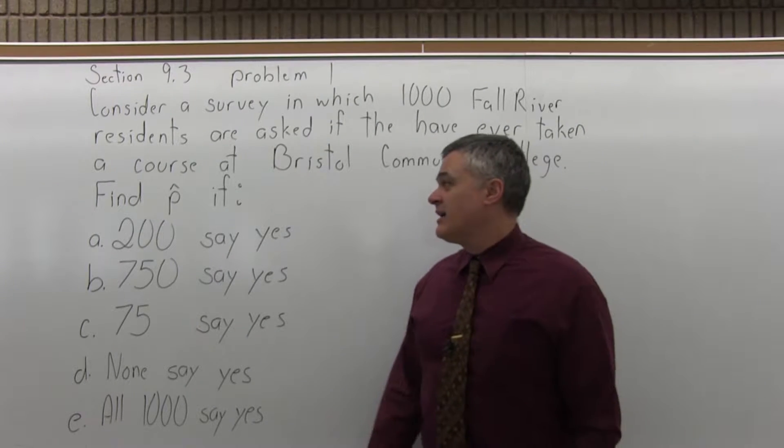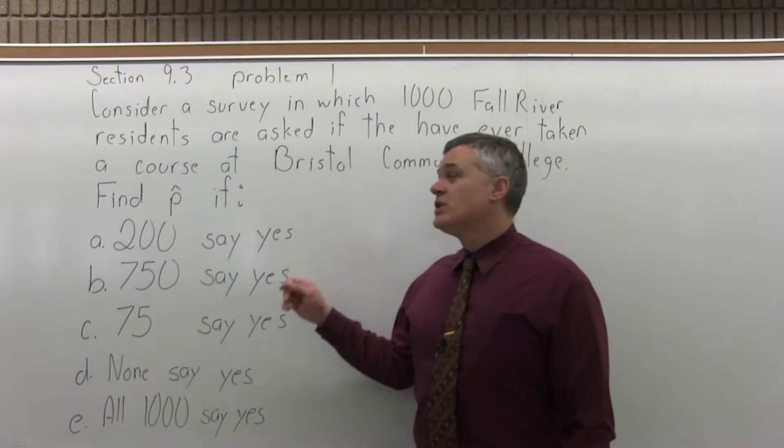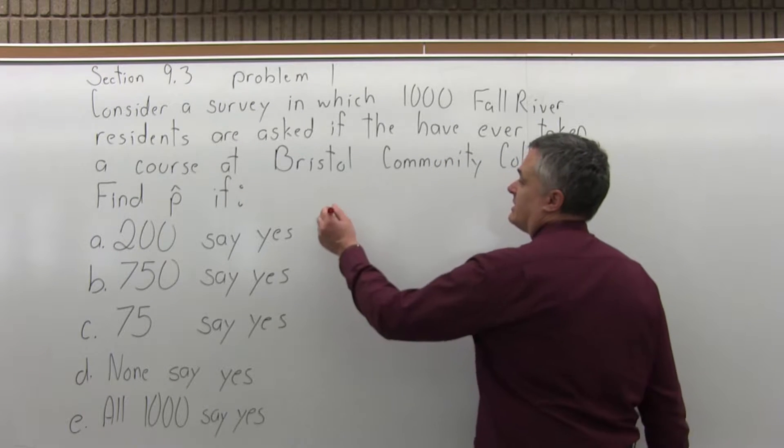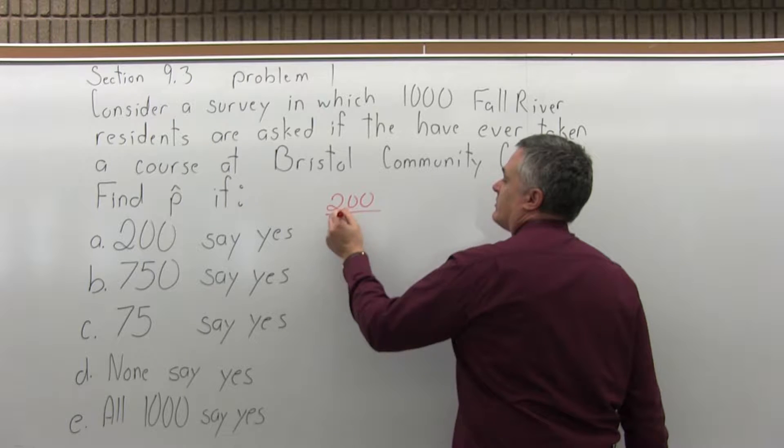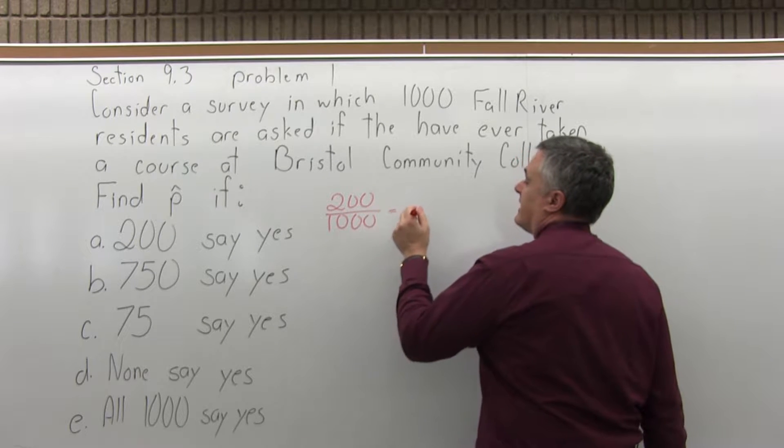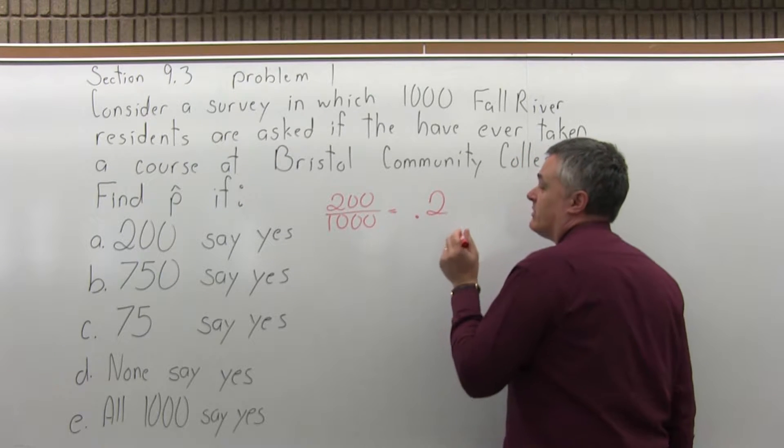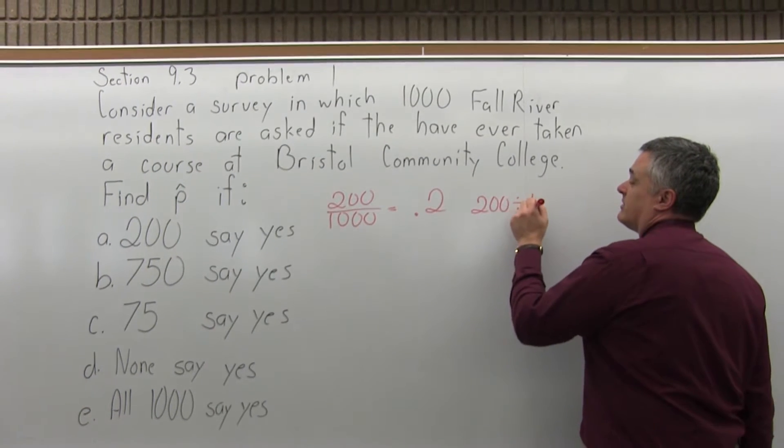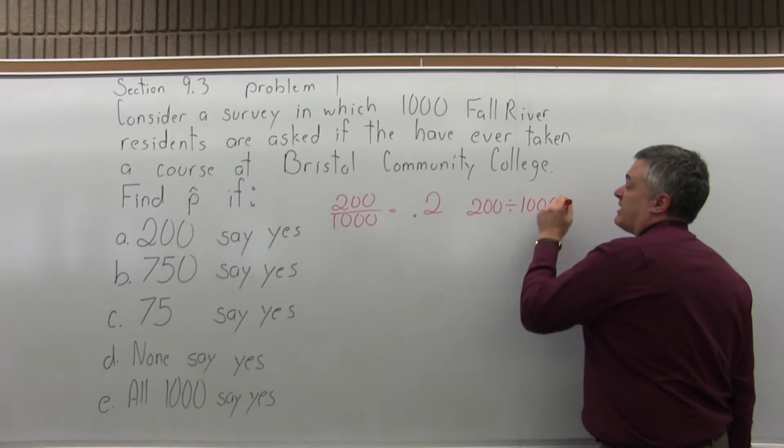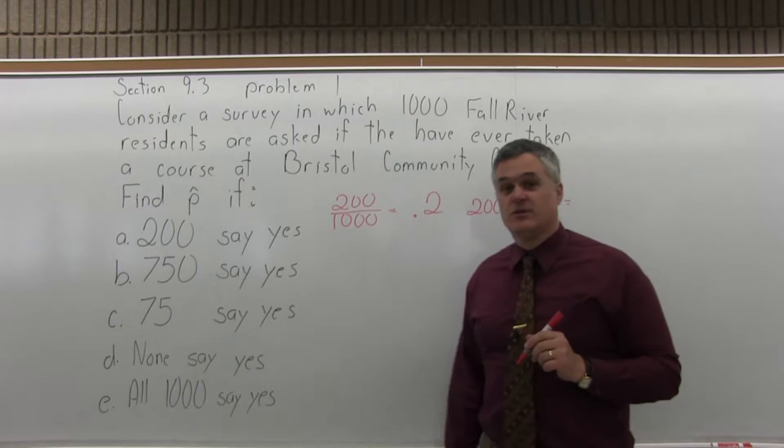Find P-hat if 200 say yes. P-hat equals the number of successes, which in this case would be 200, over the number of trials, which is 1,000. That can be reduced to 0.2. If you're not comfortable doing that, just use your calculator: 200 divided by 1,000 equals 0.2.